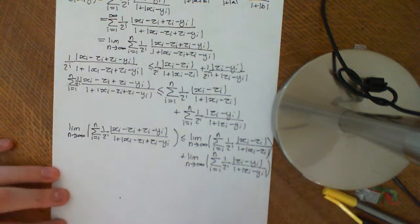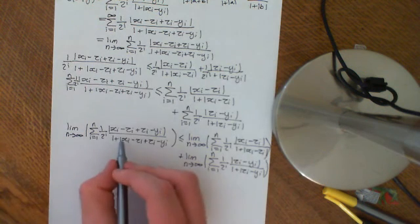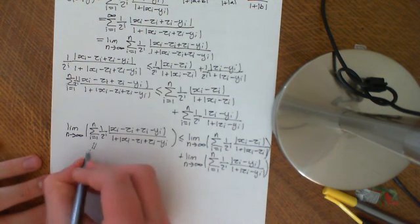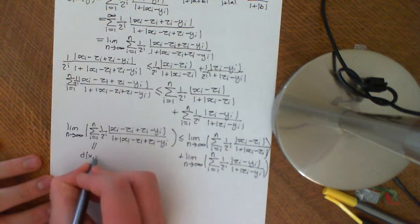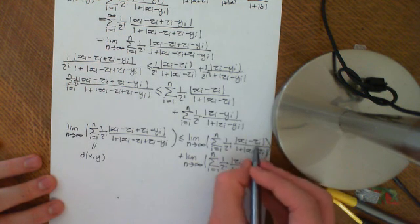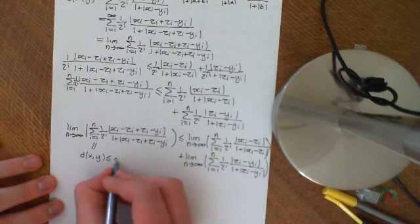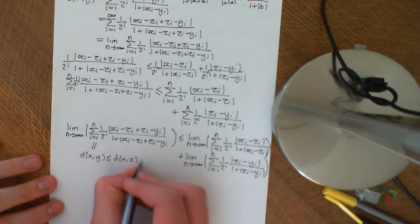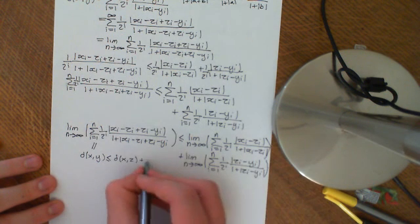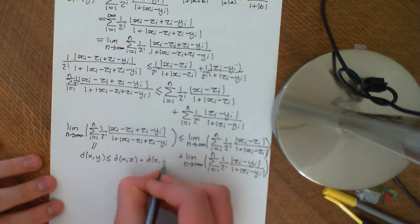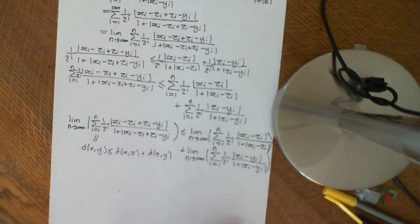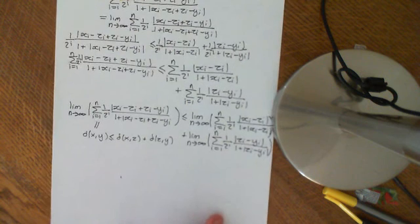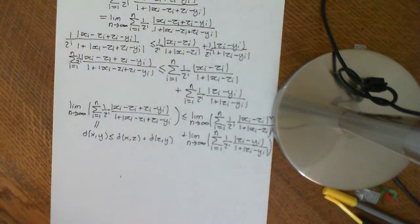The first limit is the definition of the distance between x and z, and the second is the definition of the distance between z and y. So we get that d(x, y) is less than or equal to d(x, z) plus d(z, y), which gives us the triangle inequality. That is the proof of the triangle inequality for this metric defined on the set containing all sequences of complex numbers.